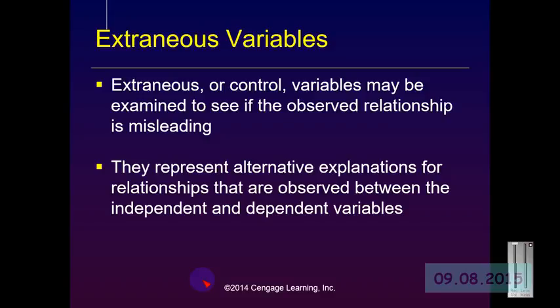Being cognizant of extraneous variables is very important for social workers, as the social milieu in which we do our treatment is often quite complex. Furthermore, many times our treatment modalities themselves are quite complex. As much as possible, when we understand all the dynamics of what is going on in a research project or in a social work intervention that we are evaluating, the more we will be able to strongly determine whether or not our project is doing what we claim it to be doing.